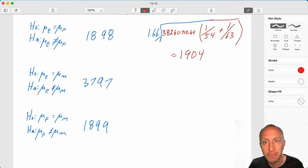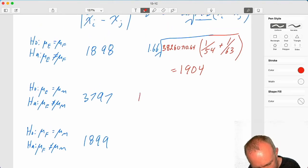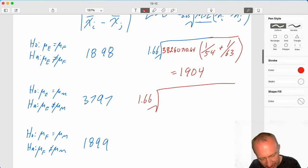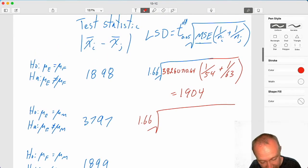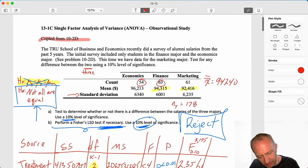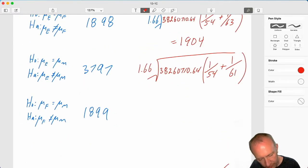Okay, there's our first one. Moving on. Next one. Now we're comparing economics and marketing. So our critical value is the same, 1.66. MSE is the same. Our sample sizes for economics is the same, 1 over 54. Our sample size for marketing is 61. Let's go through this one. That gives me an LSD here of 1918.